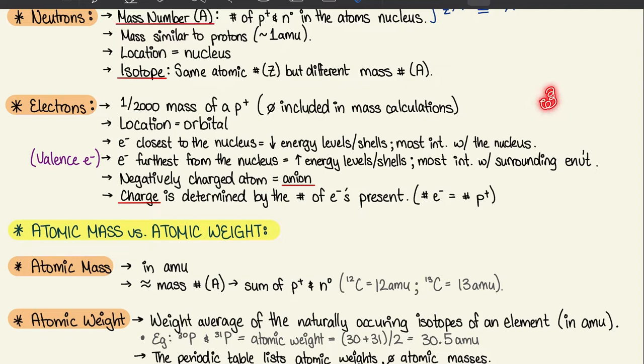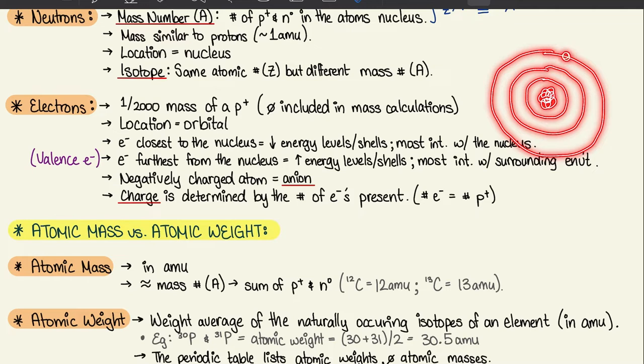I'm just going to draw it up here. This is our nucleus in the center, and then we have one orbital, two orbital, three orbital. The one found on the outside is most likely going to interact with its surroundings rather than the nucleus because of the greater distance, whereas the one at a low energy level, closest to the nucleus, is most likely going to interact with that nucleus rather than the surroundings.